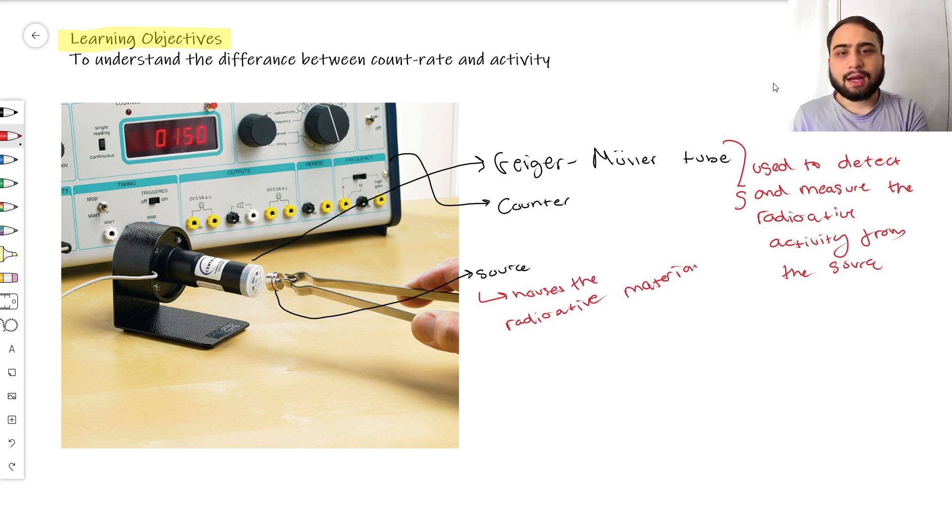Count rate is shown by the counter, but the activity has to do with the source. Let's define these two words very carefully because you have to be aware of the differences between them.